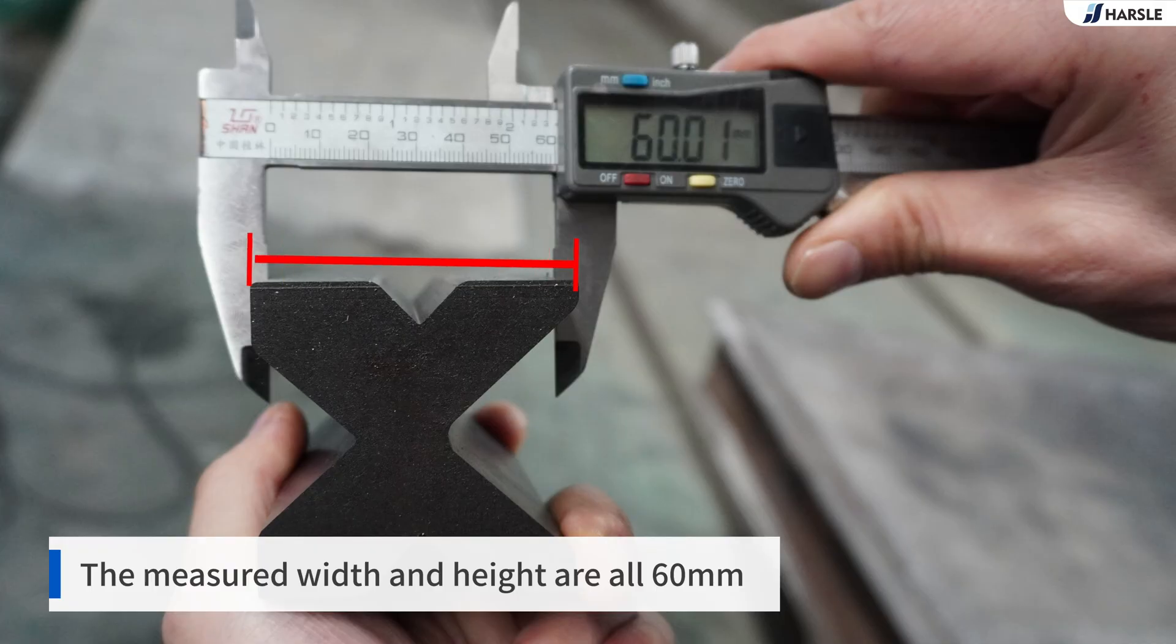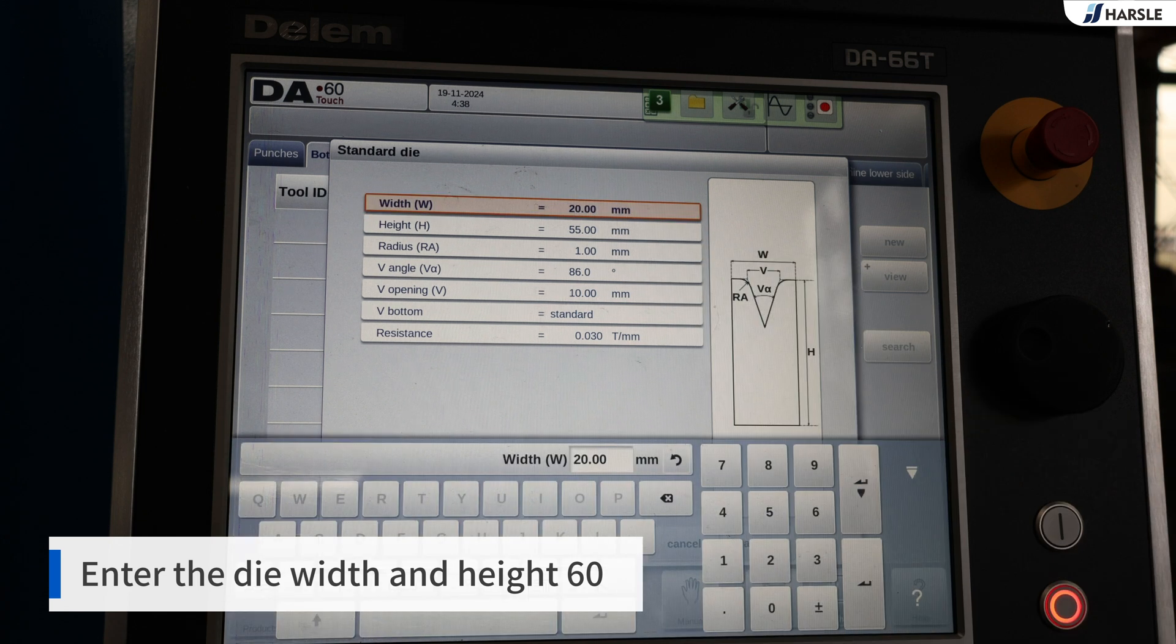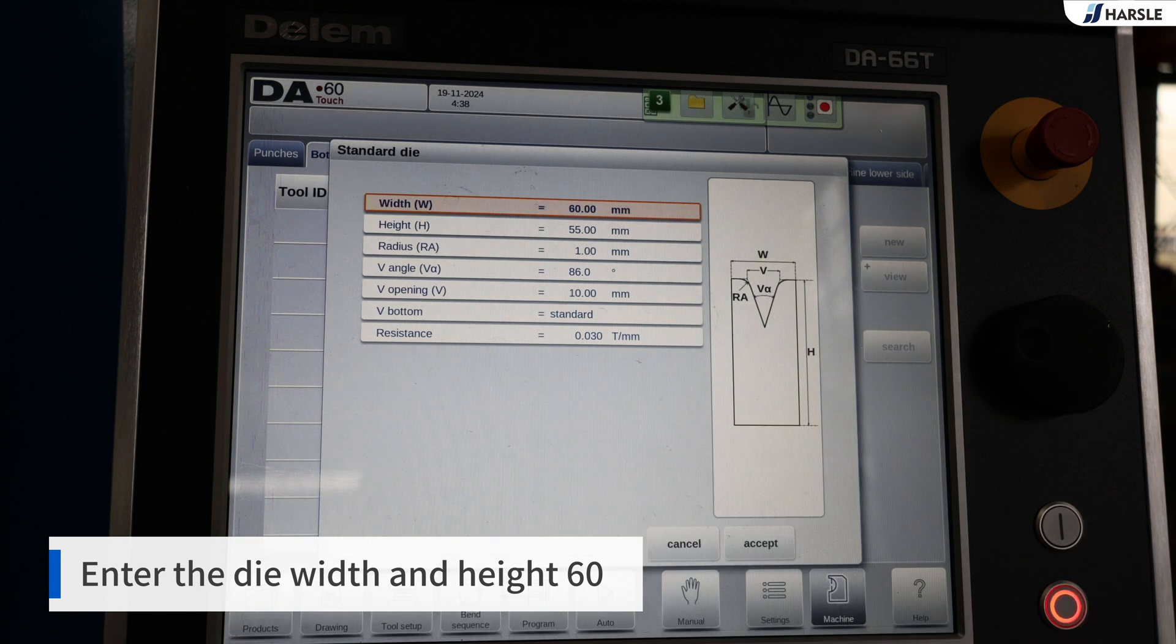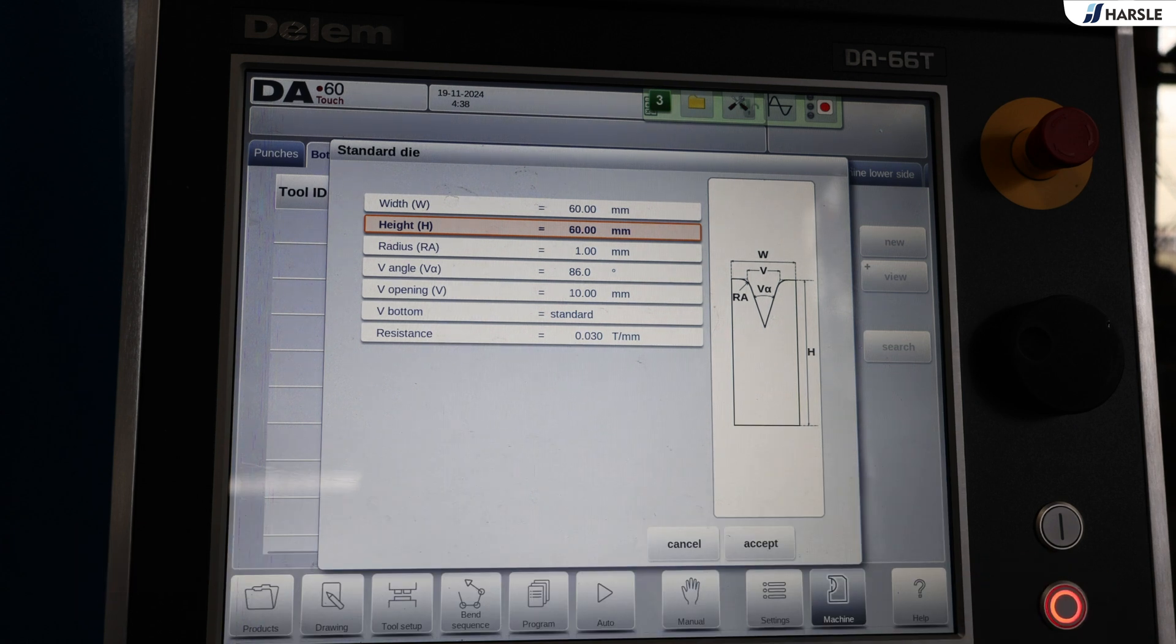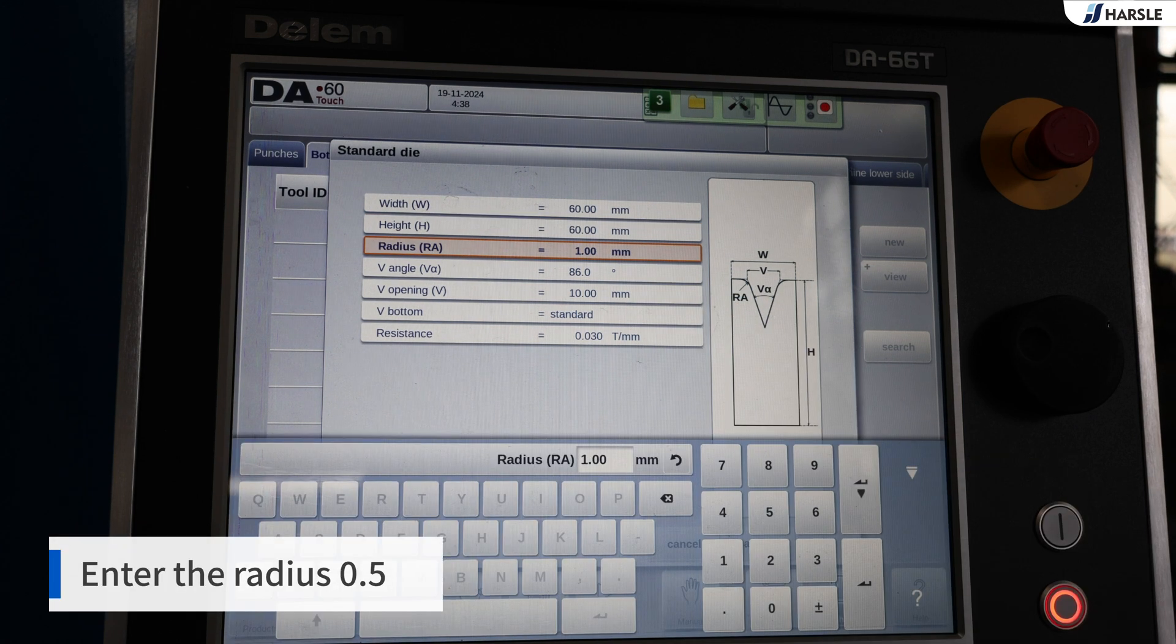The measured width and height are all 60 millimeters. Enter the die width and height 60. Enter the radius 0.5.